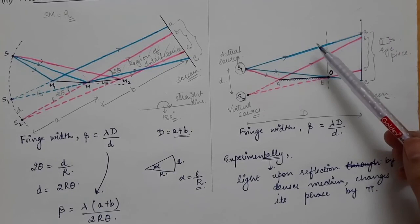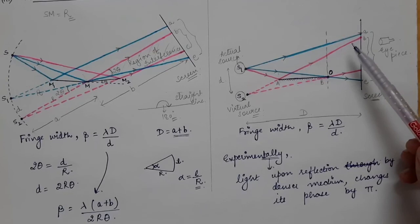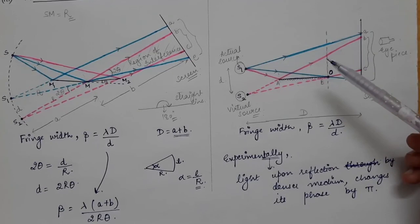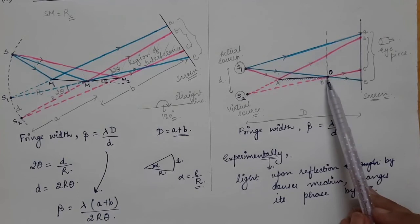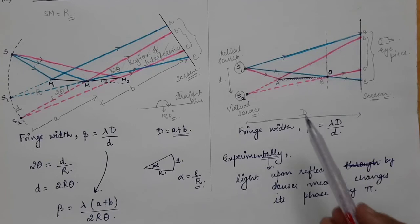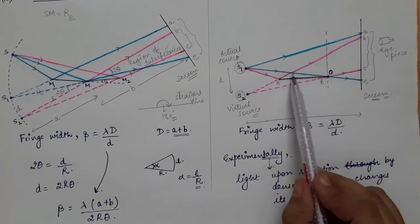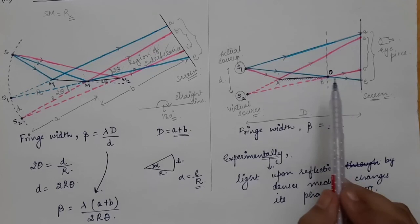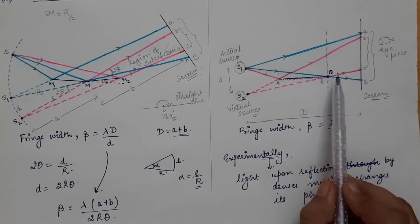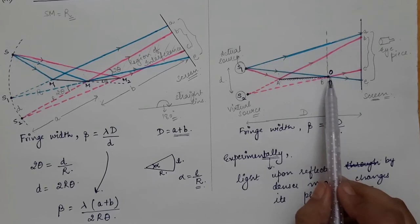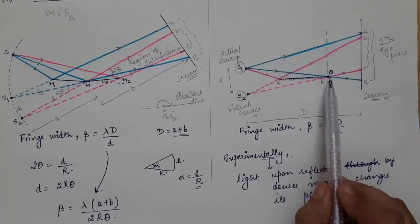In Young's double slit experiment and Fresnel's biprism there was no reflection, so the light from the two sources reached the central point without any path difference or phase difference, giving a bright fringe. But in Lloyd's single mirror, the light reflected from the denser medium changed its phase by π, so the phase difference between the direct light and the reflected light at point O was π. This caused destructive interference, and therefore a dark fringe was observed at capital O. This completes the experimental setup and theory of Lloyd's single mirror.